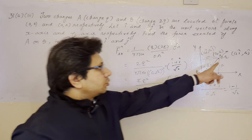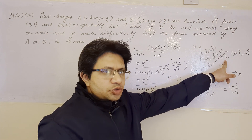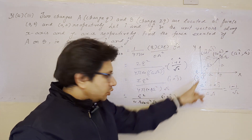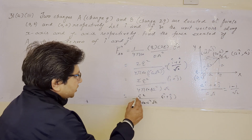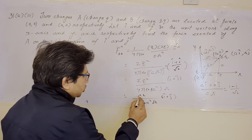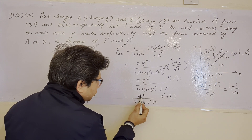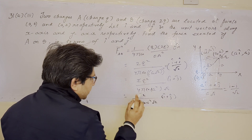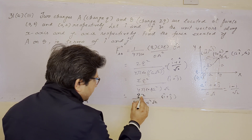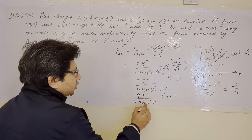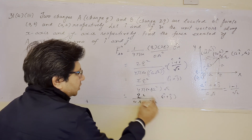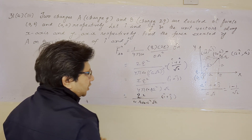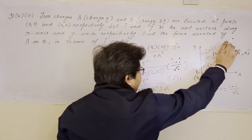The final result is: the force acting on charge 2q due to charge q equals q²/(4πε₀ a² √2) in the direction (î + ĵ). This is the force in the direction along OA. This is the final result.